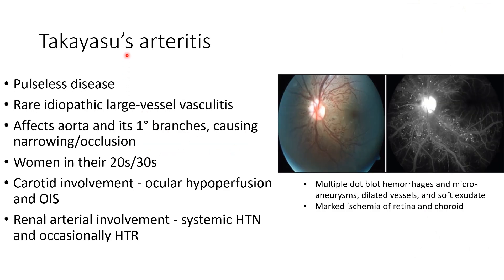A small note about Takayasu arteritis. It is also known as pulseless disease. It is a rare idiopathic large vessel vasculitis. It affects the aorta and its primary branches, causing narrowing or occlusion. It usually affects women in their twenties and thirties. Because of carotid involvement, there can be ocular hypoperfusion and ocular ischemic syndrome. Because of renal arterial involvement, there can be systemic hypertension and occasionally hypertensive retinopathy. This picture shows a fundus image of a case of Takayasu arteritis showing multiple dot-blot hemorrhages and microaneurysms along with dilated vessels and soft exudates. This is the corresponding fundus fluorescein angiography image showing marked ischemia of retina and choroid.